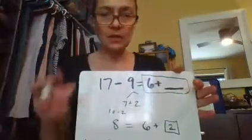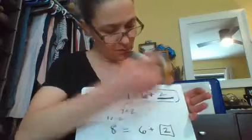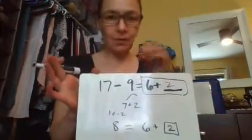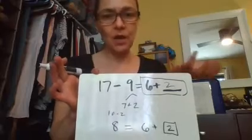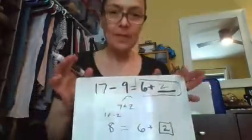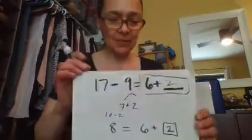17 minus 9. 6 plus 2. But their answer is the same. And that's why that equal sign works. Because the values on either side of the equal sign are the same. Okay? So that's the lesson. It was quick today. Now we can go practice. All right. Let's turn the page to 303.